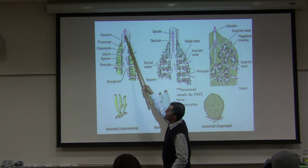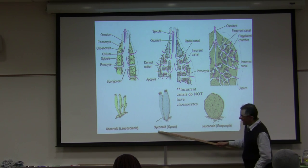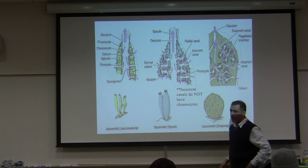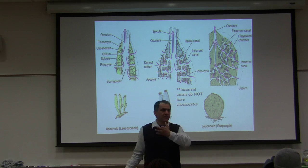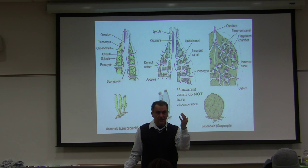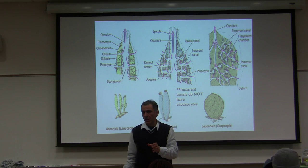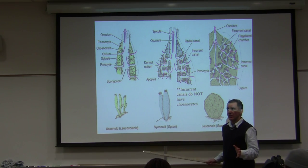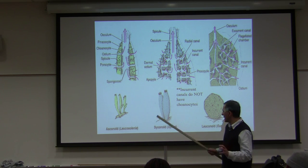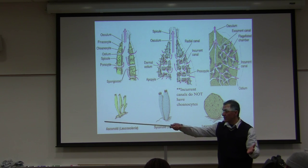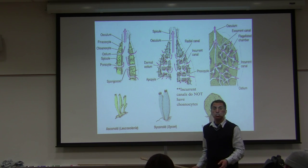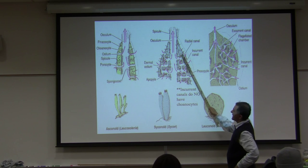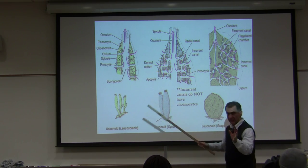The syconoid type canal — the species is called sycon, also known as grantia — you may see 'grantia' in your textbook slides, but it's the same thing. For syconoid, you have radial canals and incurrent canals.